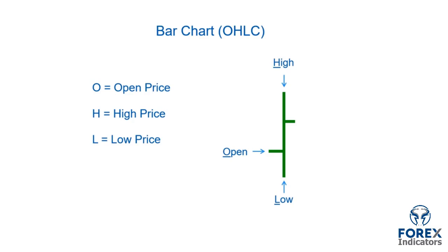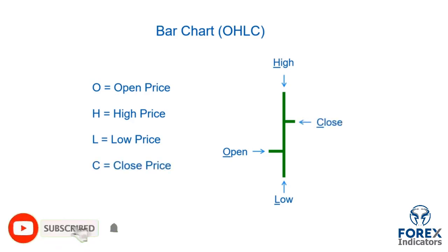The C represents the close price for the period. This will be the final tick of the one hour period, and can be identified by the small handle on the right-hand side of the bar.